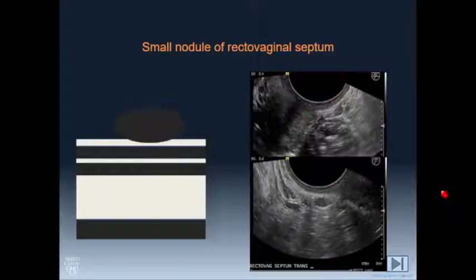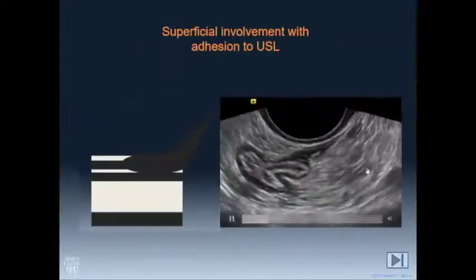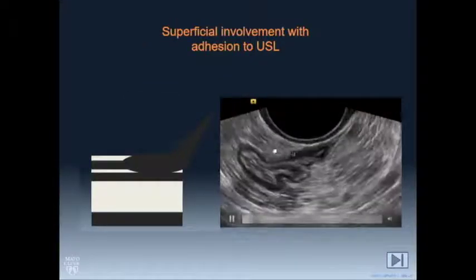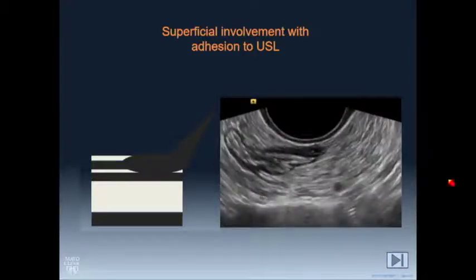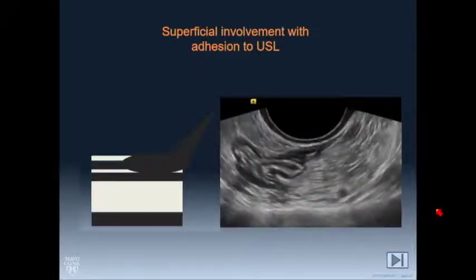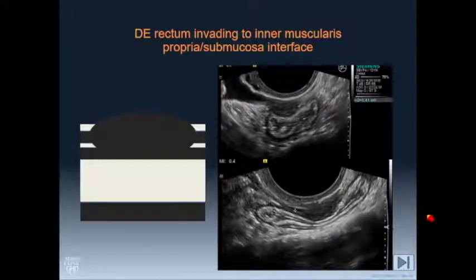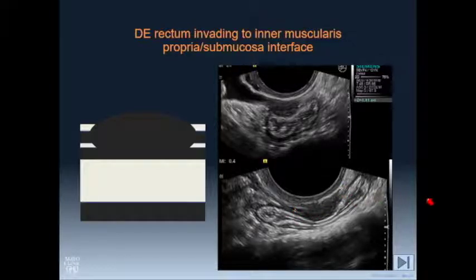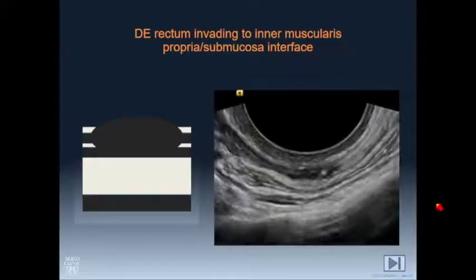This is a nodule on the rectovaginal septum — the posterior lip of the cervix is here, and this is south of that, so that's in the rectovaginal septum. Here's that distortion involving only the superficial layers and extending off to the utero-sacral ligament. That distortion is helpful in identifying these lesions. Since this nodule is a low rectal nodule, as we come in we get to that first curve, and right here is this nodule with bright internal foci. This is a very typical nodule — what Dr. Banasarov referred to as the comet sign: thin lentiform edges commonly seen in rectal wall lesions.